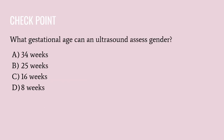Checkpoint: Although not discussed in the previous slides, this is within your textbook and something you should know. What gestational age can an ultrasound assess gender? The answer is C — 16 weeks. A transvaginal ultrasound may be performed in the first trimester to confirm the pregnancy, but that cannot determine the gender. Only an ultrasound around 16 weeks can.